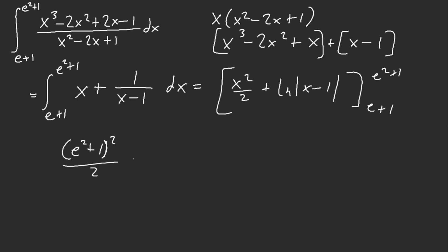But we do have plus 2, and then minus e plus 1, e plus 1 squared over 2, and then we have e minus 1, so what we have here is we have e squared plus 1 squared minus e plus 1 squared.